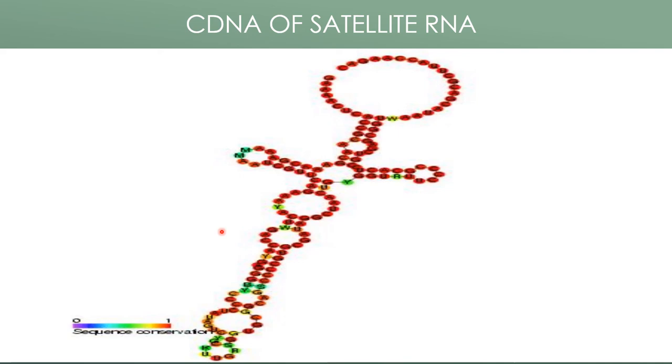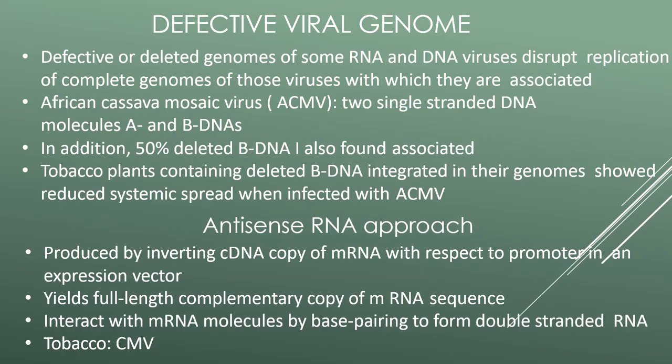Expression of satellite RNA has been shown to reduce disease symptoms as well as virus accumulation. Defective viral genome: defective or deleted genomes of some RNA or DNA viruses disrupt replication of the complete genome of those viruses with which they are associated. African cassava mosaic virus (ACMV) has two single-stranded DNA molecules, A and B; in addition, a 50% deleted B DNA is also found associated with it.